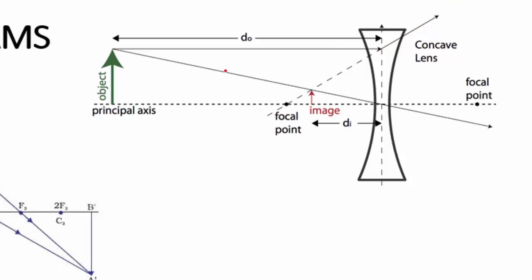The next ray goes right through the optical center and continues along. Where those two rays intersect is where the image is formed — you get a small image. The size is smaller, the attitude is upright, it's located in front of the lens inside of F, between F and the lens, and it's a virtual image because of the dotted line.